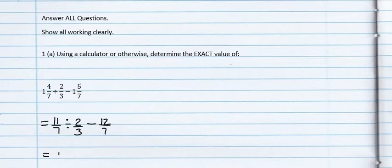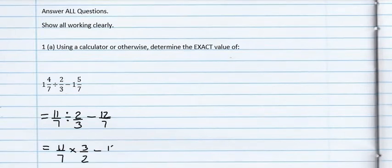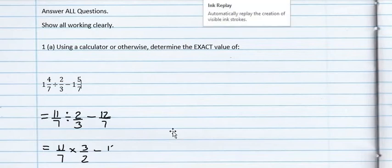we want to work out the first part, we're dividing 11 over 7 by 2 thirds. So now remember that dividing by 2 over 3 is the same as multiplying by the reciprocal of 2 over 3, which is 3 over 2. And then what we simply do is write back the 12 over 7.